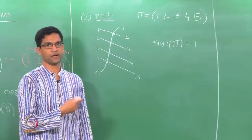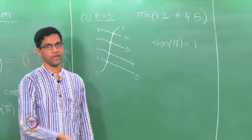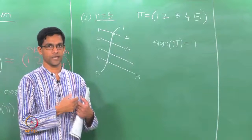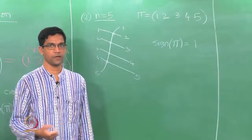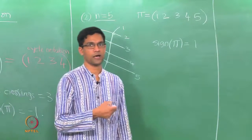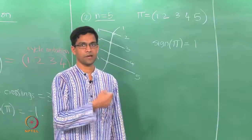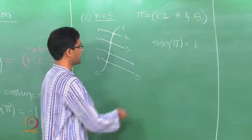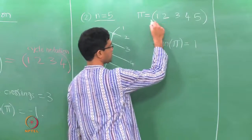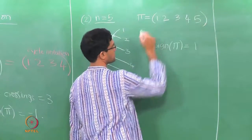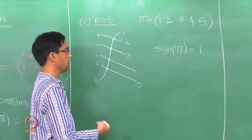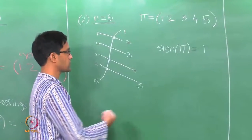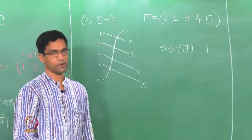From this it is clear how cycles behave in general. If you have a cycle of even length, such as 1, 2, 3 up to some even number, then that permutation has sign minus 1. If you have a cycle of odd length, say going from 1 through 5, then it has an even number of crossings and is therefore an even permutation.